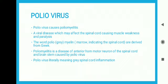Derived from the Greek word, poliomyelitis is a disease of the anterior horn motor neurons of the spinal cord and brain stem, caused by poliovirus. Poliovirus literally means grey spinal cord inflammation.